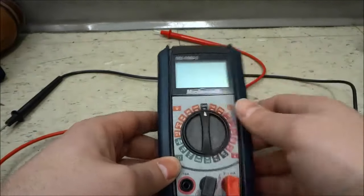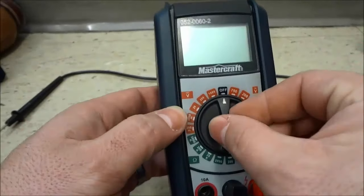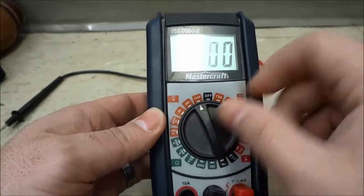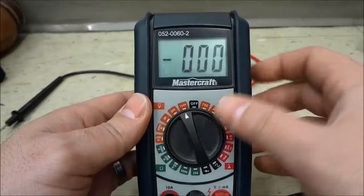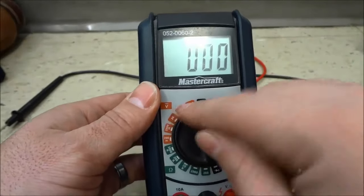Now let's take a look at the symbols. This section right here is for the DC volts, the direct current volts.